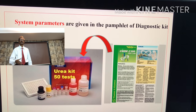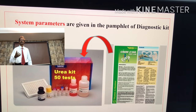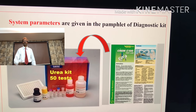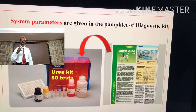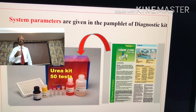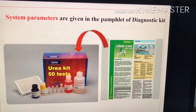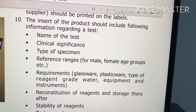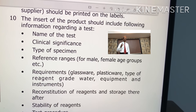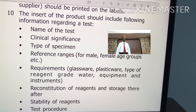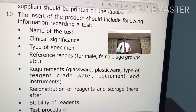Now open the kit and take out the pamphlet which is placed inside the box, because this pamphlet gives information about system parameters including standard operation procedures — that means how to use the kit as well as how to perform the test. The kit insert, that means the pamphlet, will give you the following information. First, the name of the test — in this case we will take the example of urea determination.